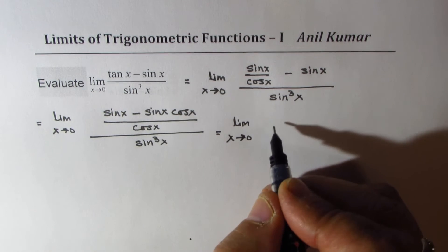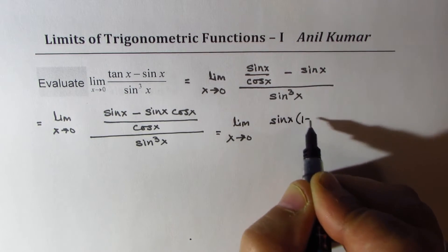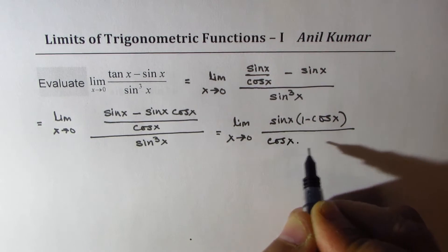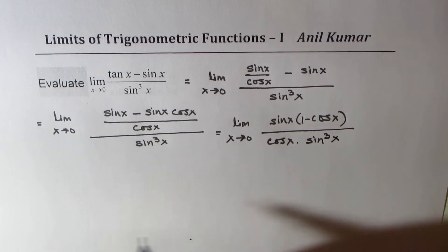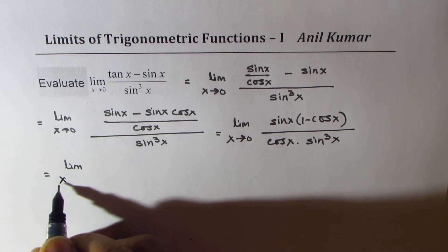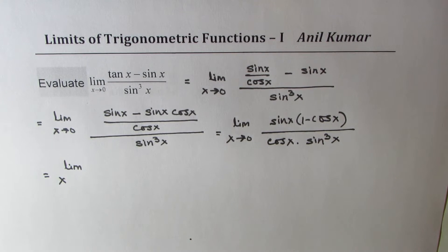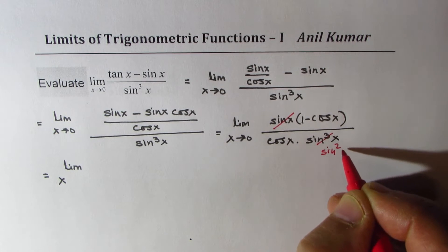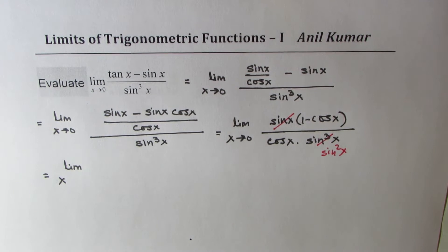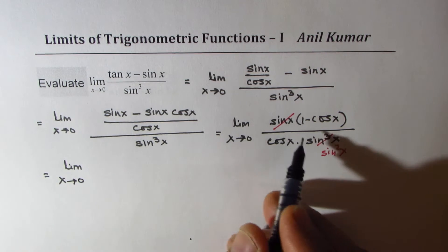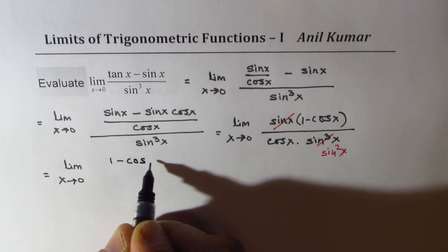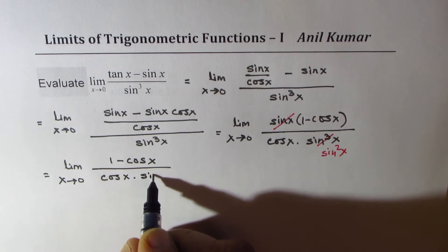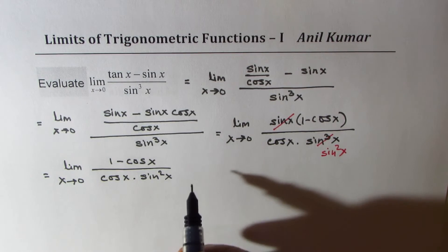In the numerator we can take sin(x) as a common factor, giving 1 minus cos(x). The denominator becomes cos(x) times sin³(x). We can then cancel one sin(x), leaving sin²(x) in the denominator. So we get the limit as x approaches 0 of (1 − cos(x)) over (cos(x)·sin²(x)).